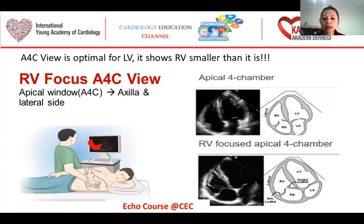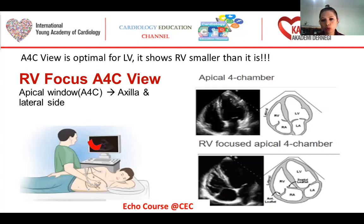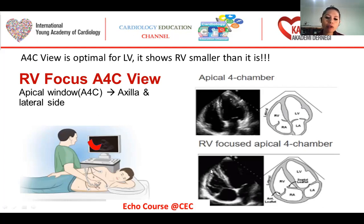Our standard apical 4-chamber view is optimal for the left ventricle — it shows the right ventricle smaller than it is. So for measurements about the right ventricle, we have to obtain an RV-focused apical 4-chamber view. How can we get it? It's easy. First, we put our probe where we get our standard apical 4-chamber view, and then we move the probe a little bit laterally toward the axilla. We can be sure we have the right RV-focused view if we see the entire RV free wall and apex clearly.